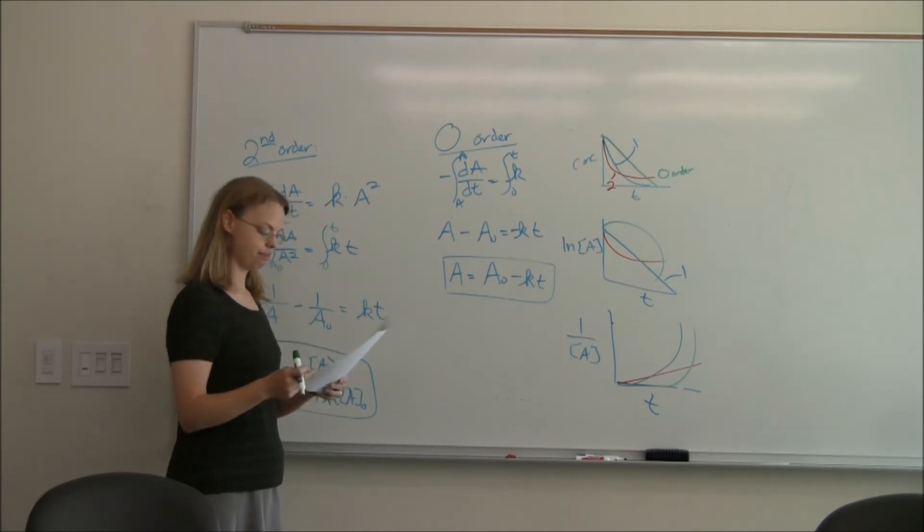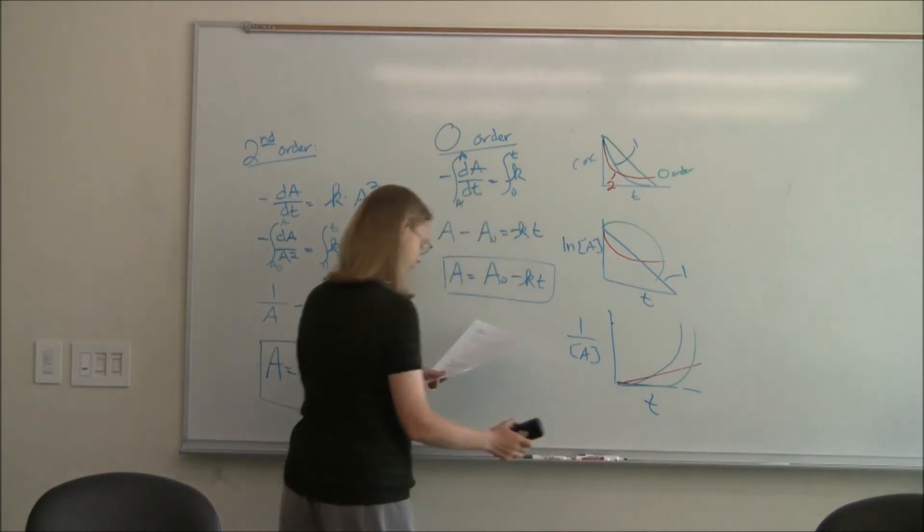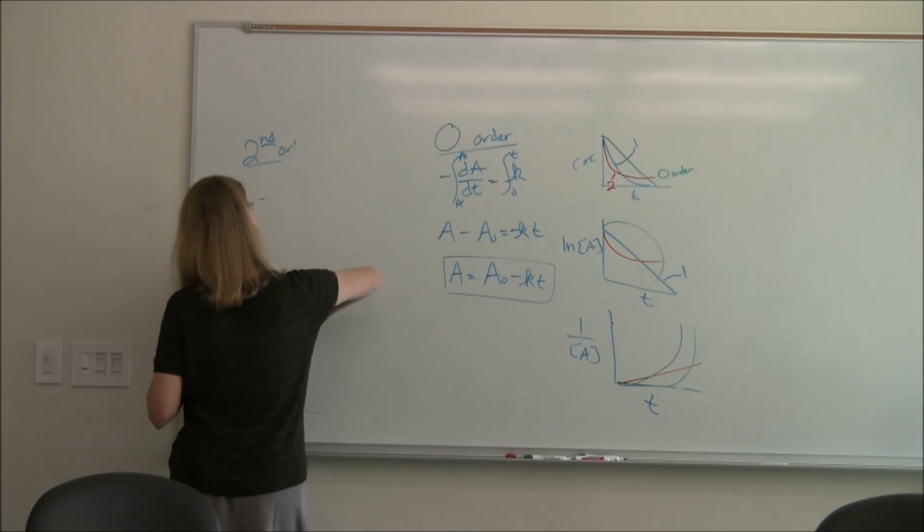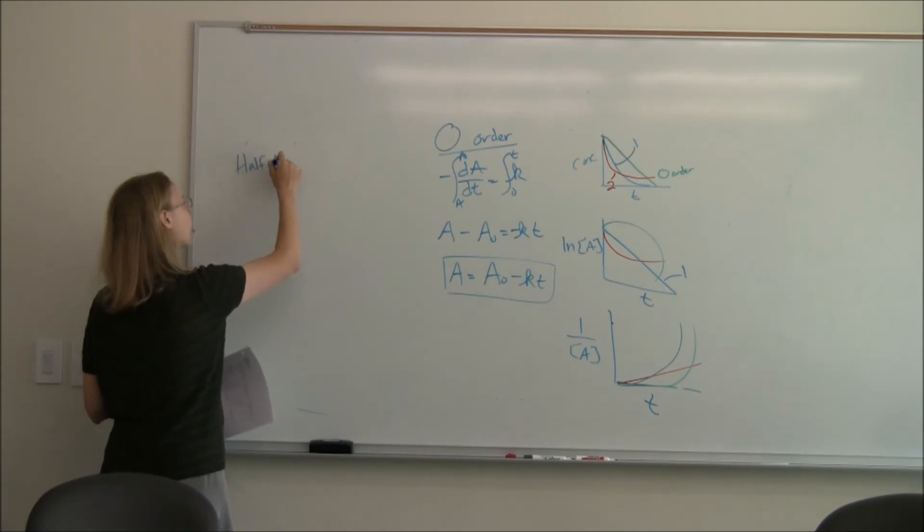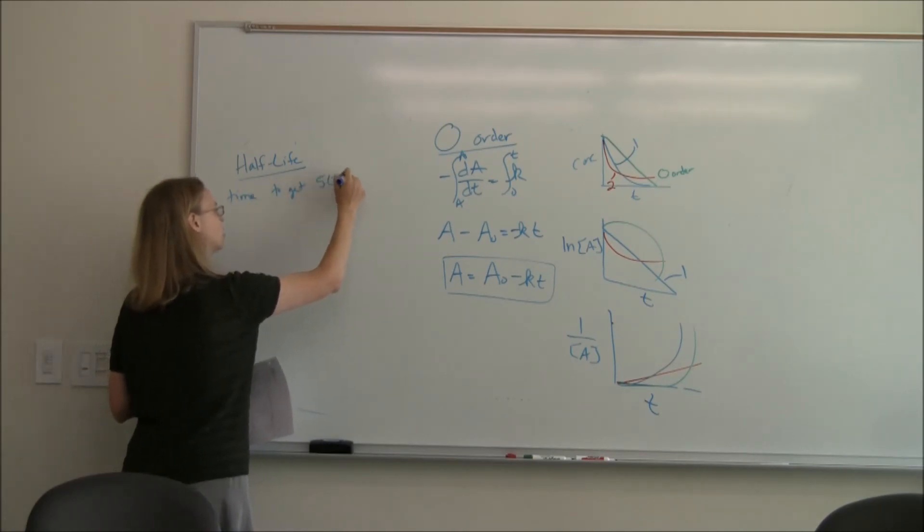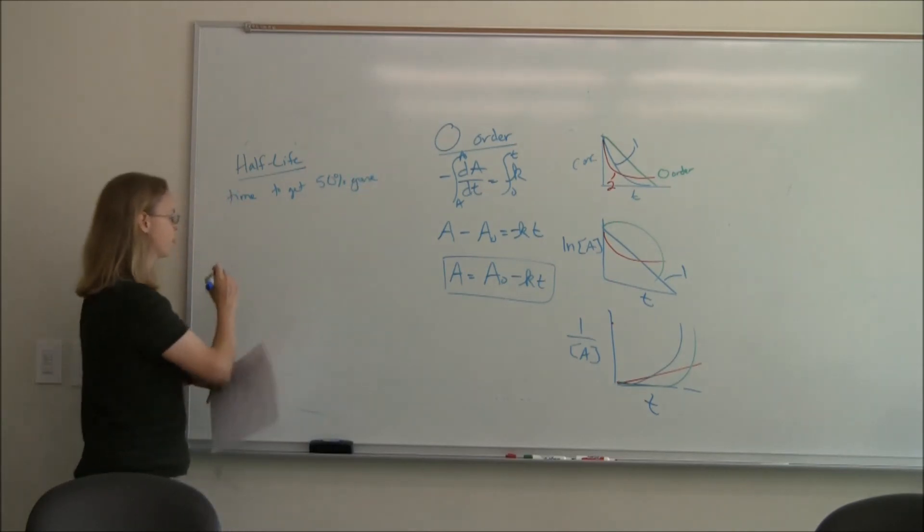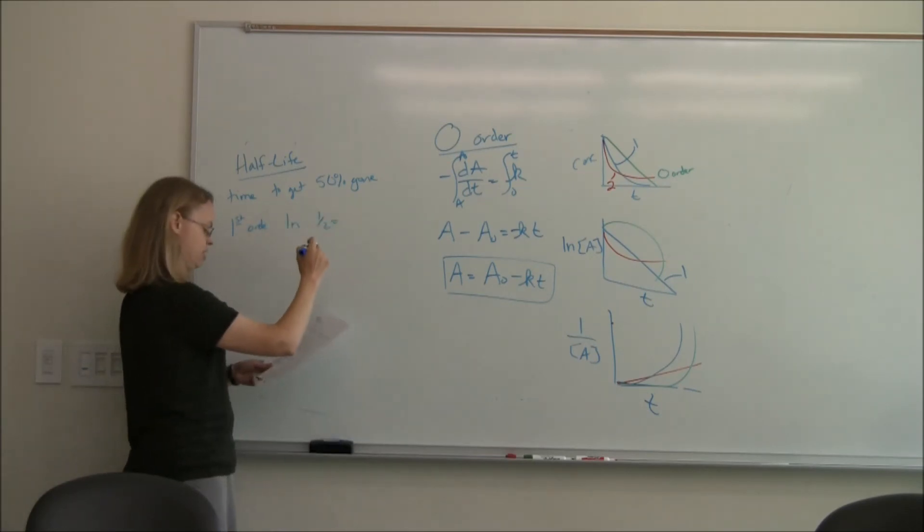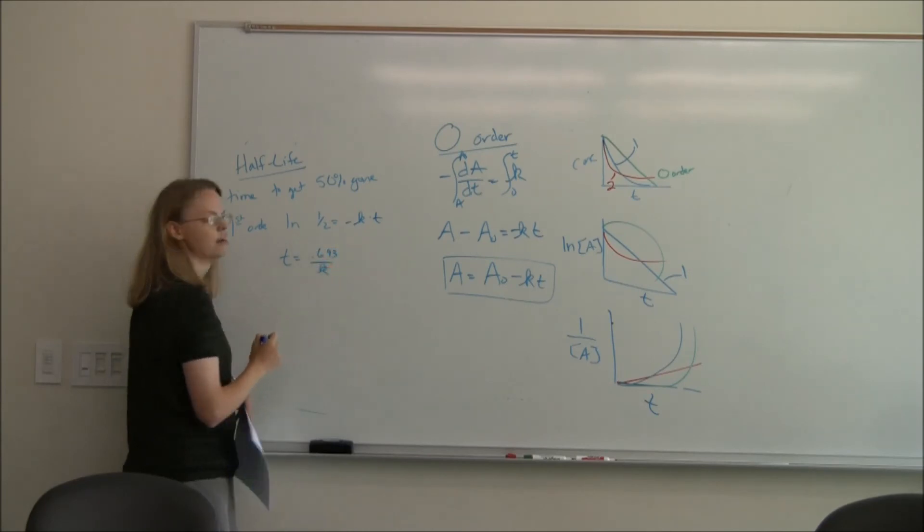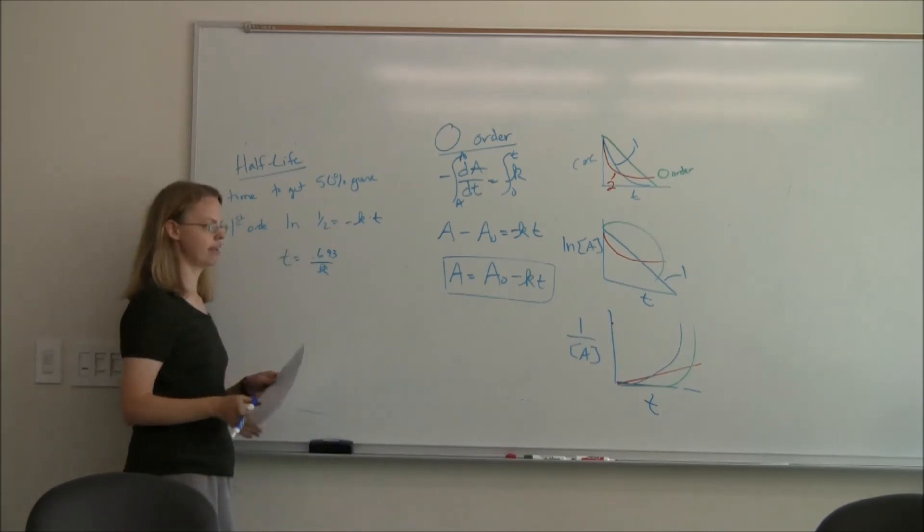Now, a lot of times, people will talk about half-life. So half-life is just the time to get to where 50% is gone. And so for the first order, you would get the natural log of one-half is equal to minus kt. And so t ends up being 0.693 over k. But you can solve those for any of them. Again, I don't know that it's really worth memorizing, but you put a half in, half of A zero, basically. And for that, you can solve that.